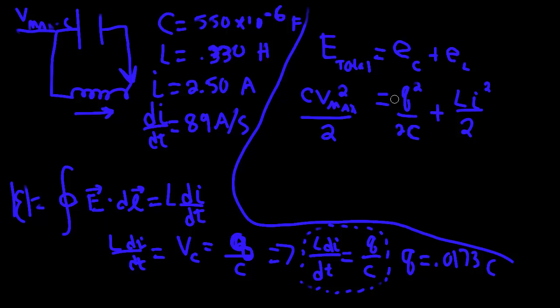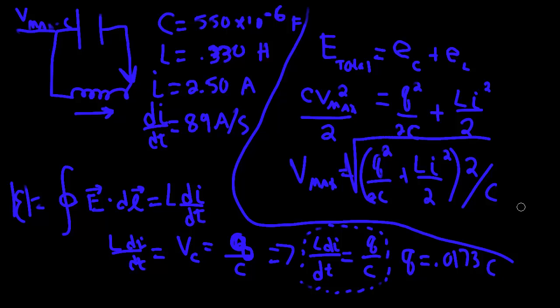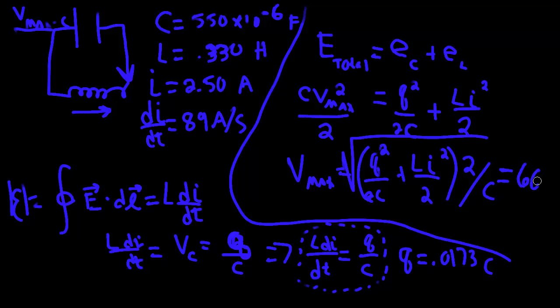And then when you do that, you'll find, after you plug in the charge and you plug in the instantaneous current and the capacitance, and then you do some algebra, you'll get that V max should be equal to all of that Q squared divided by 2C plus Li squared divided by 2, all of this multiplied by 2, divided by the capacitance, square root. And you'll have to take my word for it, that all is equal to 266 volts.